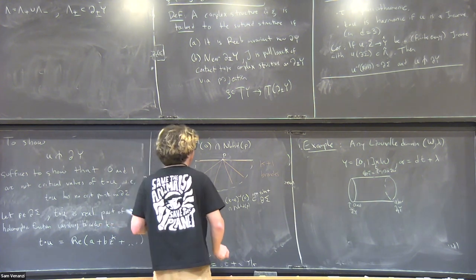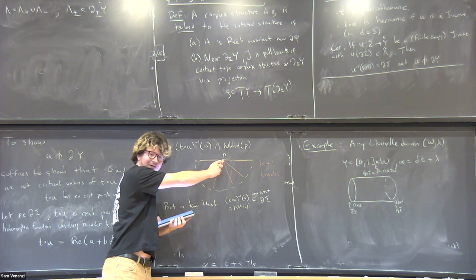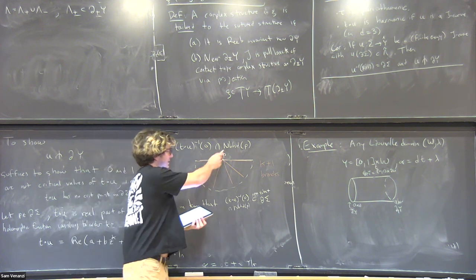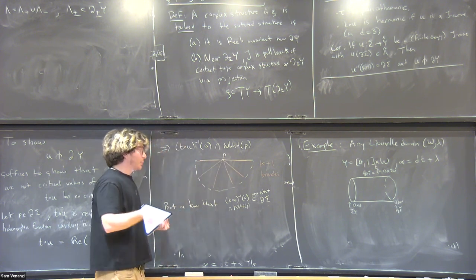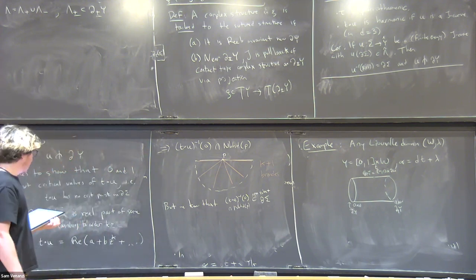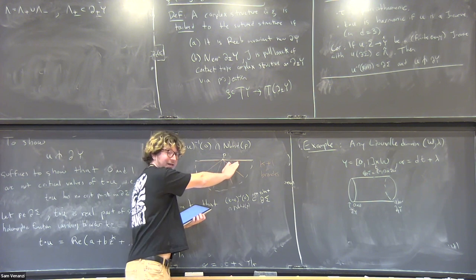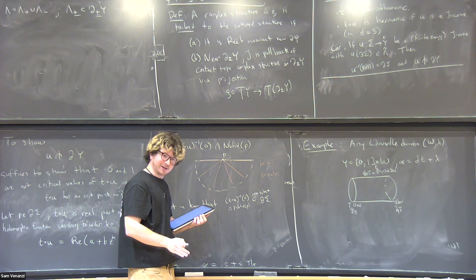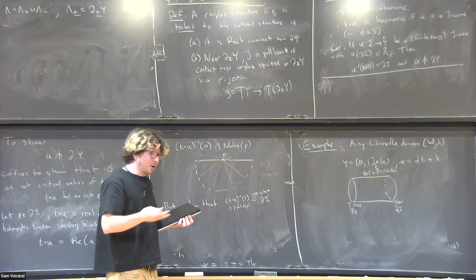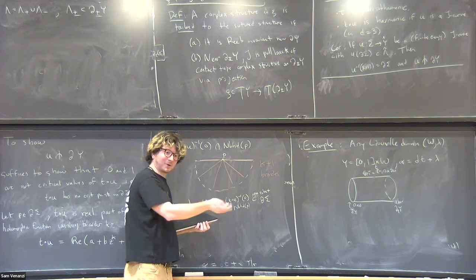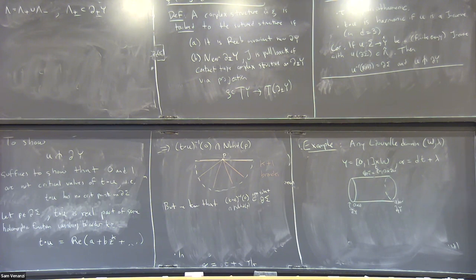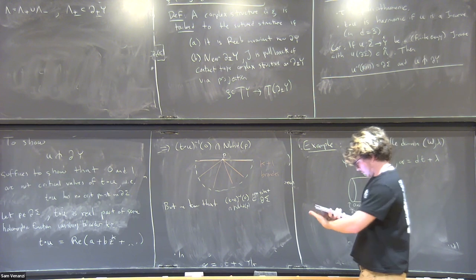Basically the crux is that the boundary is the level set of a harmonic function. If you have a critical point, the zero level set would have to be singular with multiple branches. But since we already know the boundary is smooth, that implies there can't be any such branches. The harmonic function can't be singular, so there are no critical points.